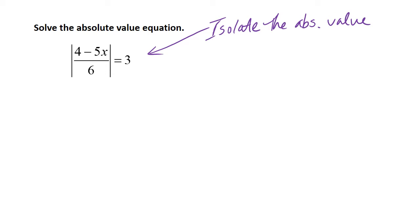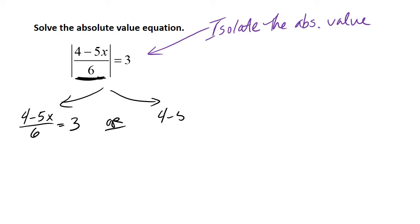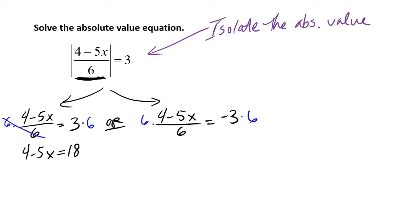Since the absolute value is isolated, we can immediately think through that the distance of the expression inside from 0 is 3 — either 3 in the positive realm or 3 in the negative realm. So we set the inside equal to positive 3 or negative 3. To clear fractions, we multiply by the common denominator of 6 on both sides. The 6 cancels, giving us 4 minus 5x equals 18. Subtracting 4 from both sides gives 14, and dividing by negative 5 gives x equals negative 14 fifths.